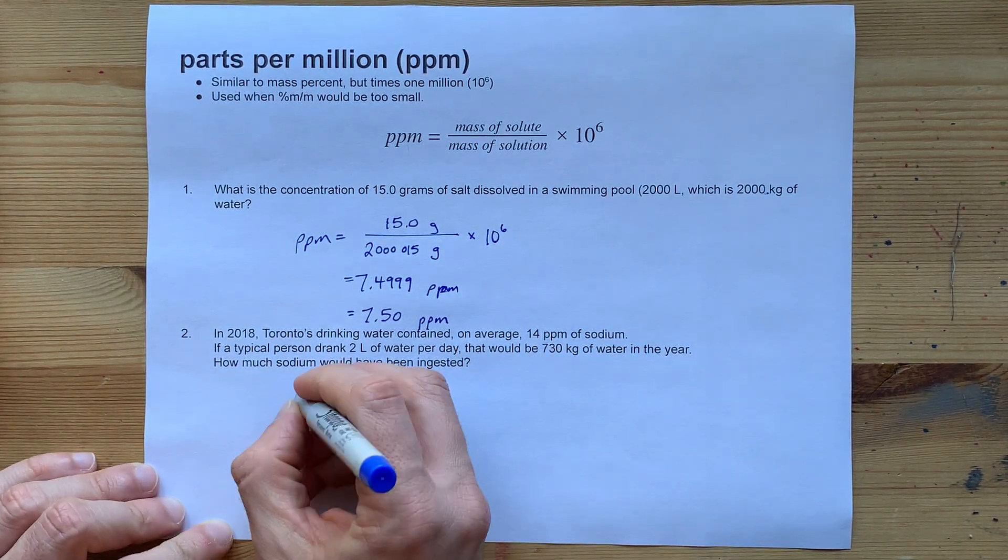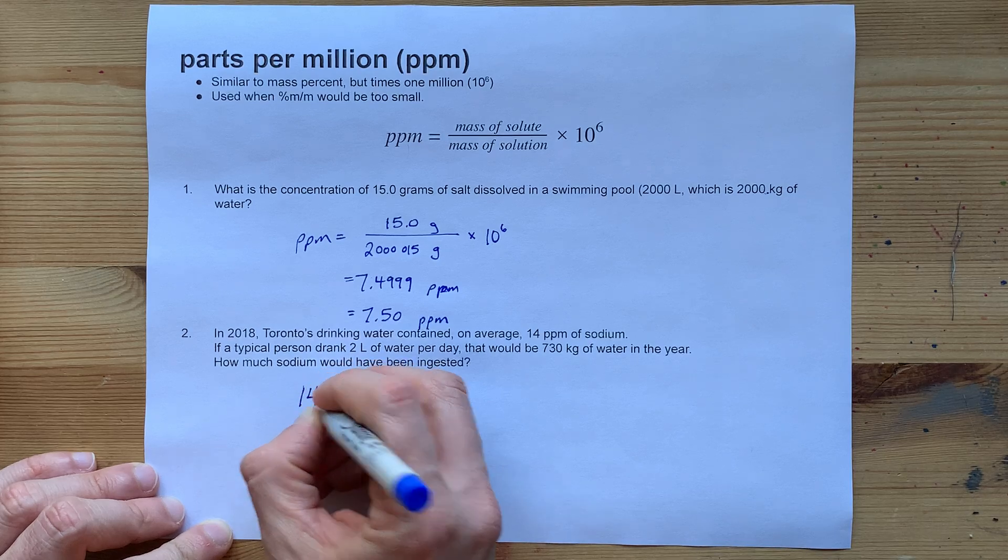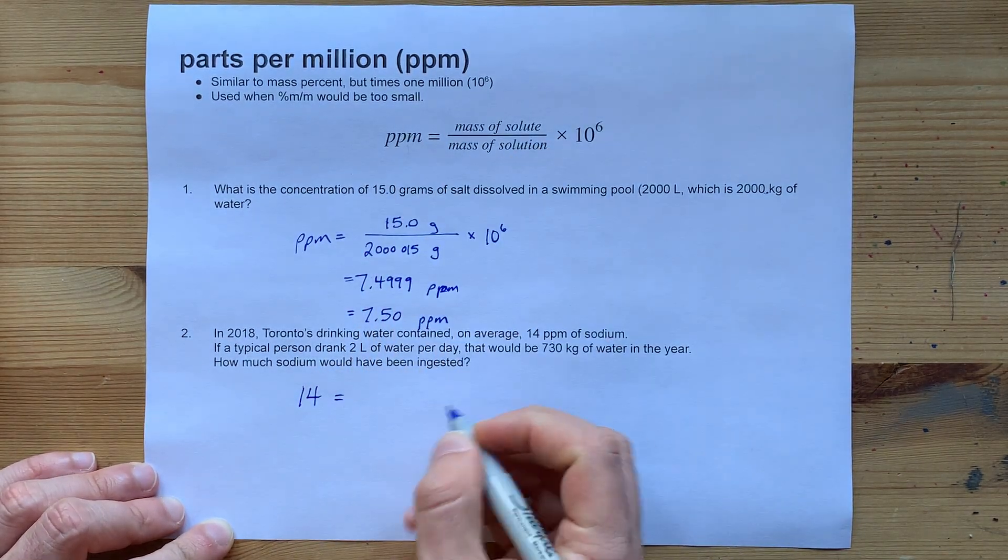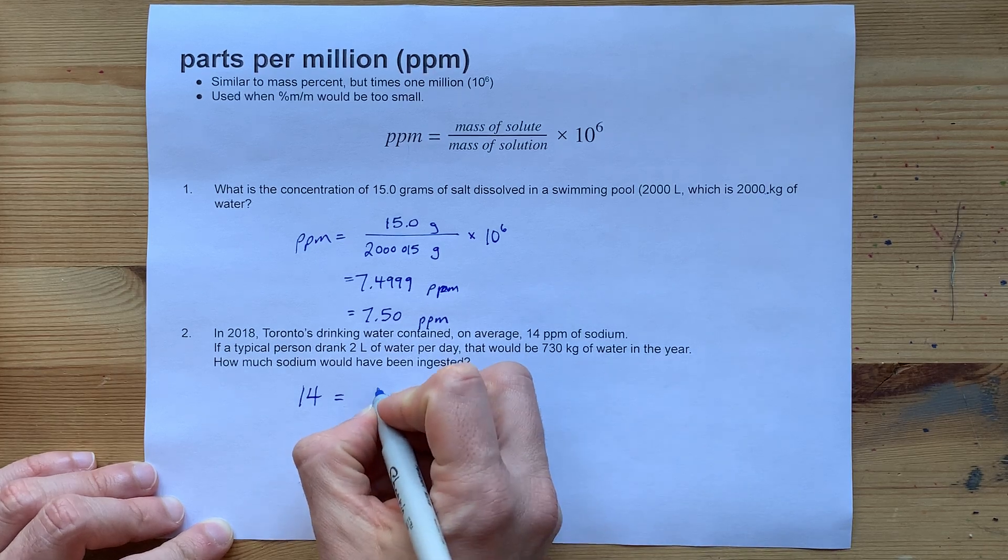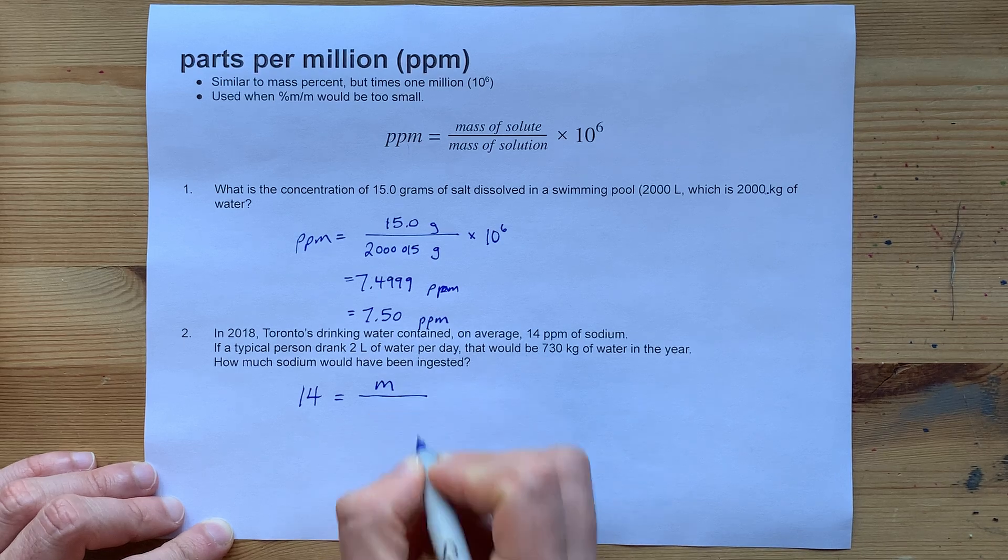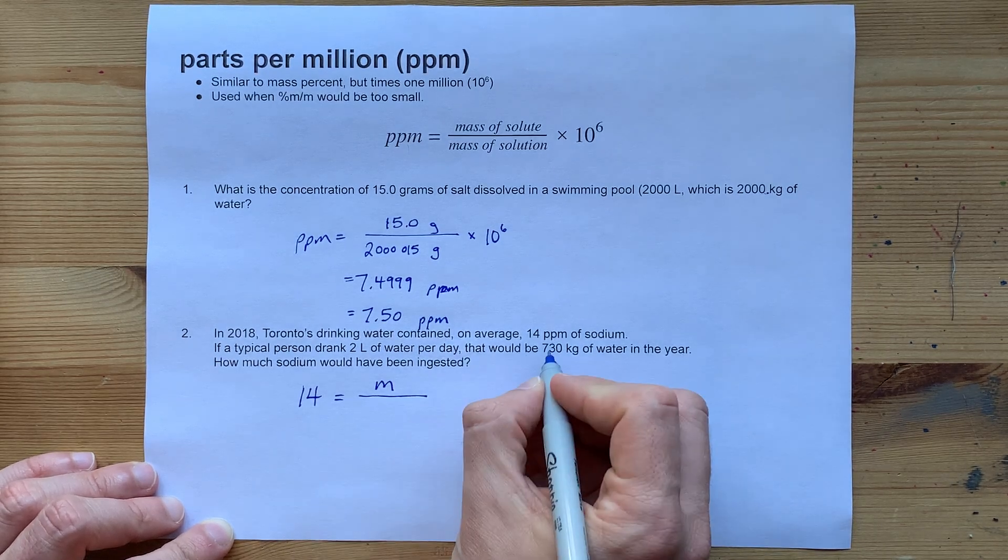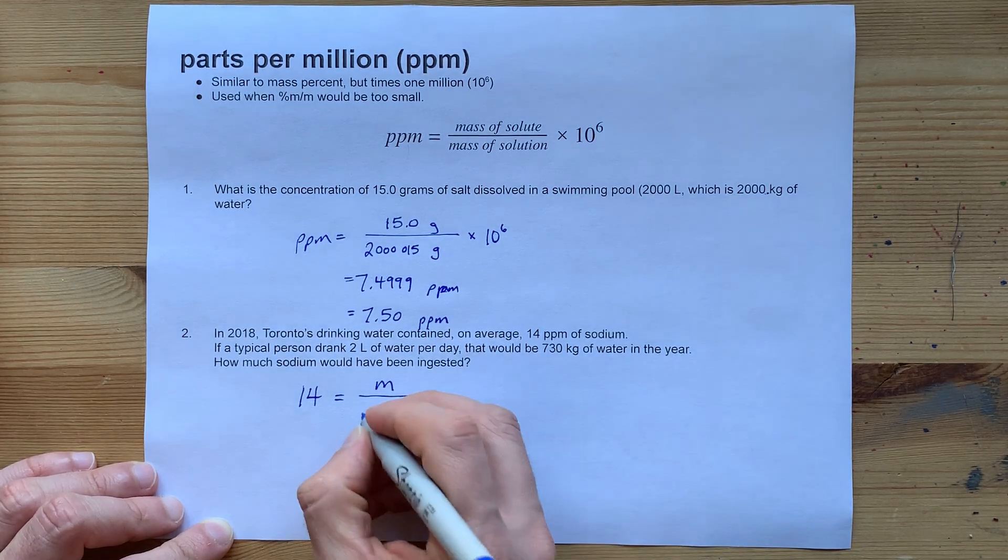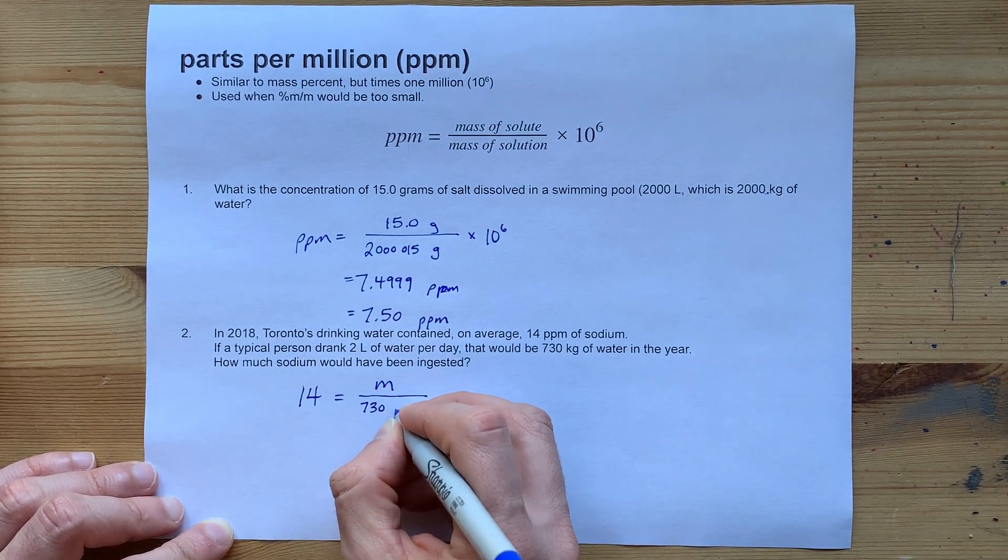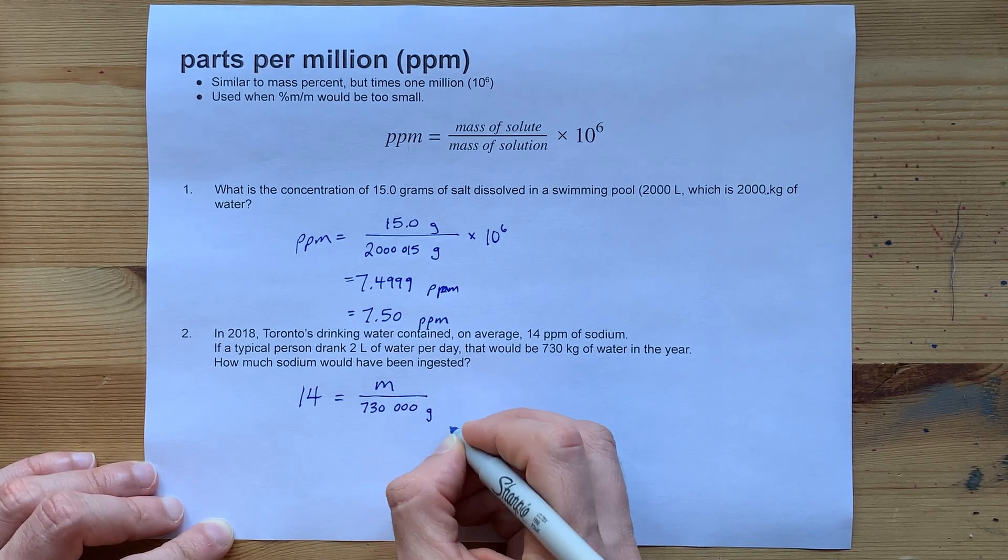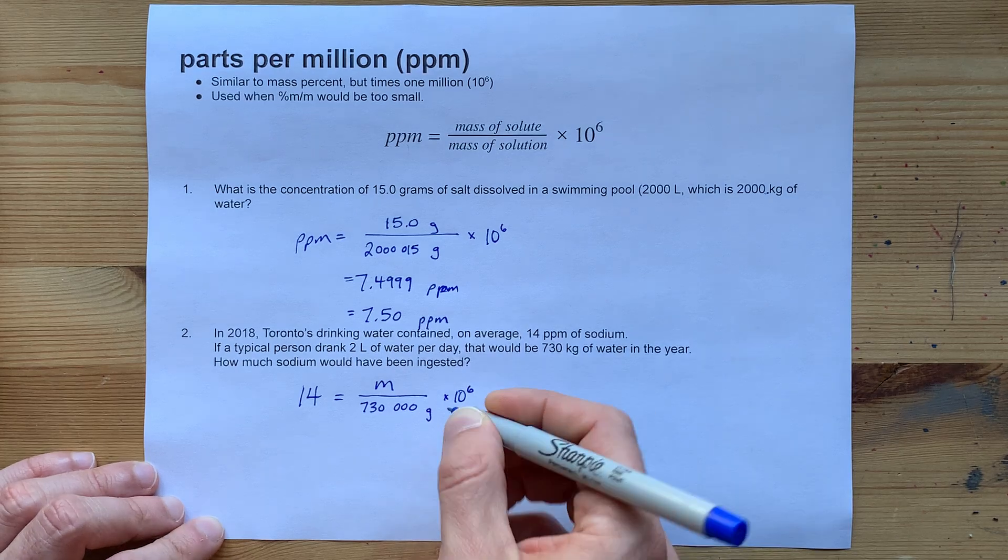Well, here we're actually being given the ppm, so I'll put that here on the left side of the equal sign where ppm goes. So, we don't know how much sodium they're ingesting. That's what we're being asked about, so I'll put an m there. And we do know the approximate mass of the solution. It's 730 kilograms. That's 730,000 grams. Now, don't forget your times 10 to the power of 6.